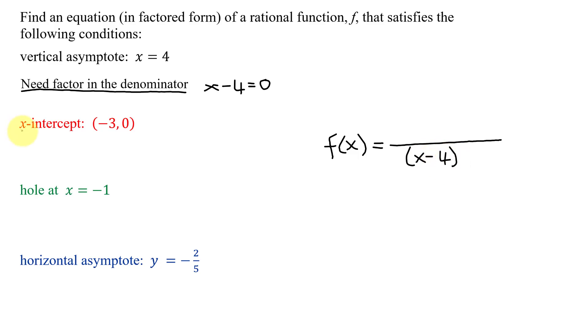Next, I know the x-intercept is negative 3, 0. Where do x-intercepts come from? They come from setting y equals 0, or in this case, f(x) equals 0. And when does a fraction equal 0?